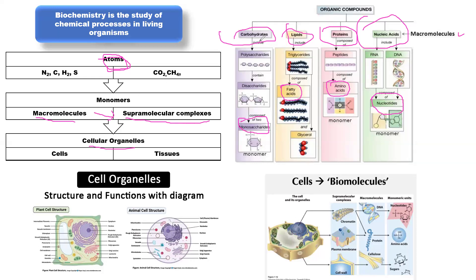Examples of these macromolecules are carbohydrates, lipids, proteins, and nucleic acids. These macromolecules will also arrange themselves to form supramolecular complexes — examples being viruses, prions, cytoskeletons, and ribosomes. Try as much as possible to be jotting all this down so that you have the basic information.